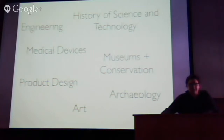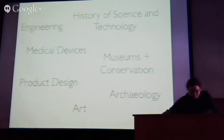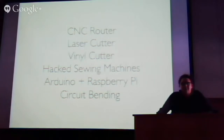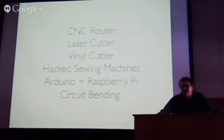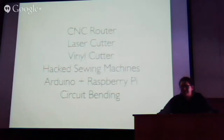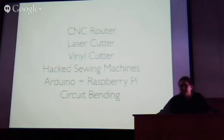3D printing is not the only fabrication technology — you can also look at CNC routers, laser cutters, vinyl cutters, hacked sewing machines to build your own designs. There are garage-sized things that knit your own sweaters with similar computer control, as well as Raspberry Pi as part of a larger emphasis on circuit bending and hacking — different ways of engaging with technology around you.